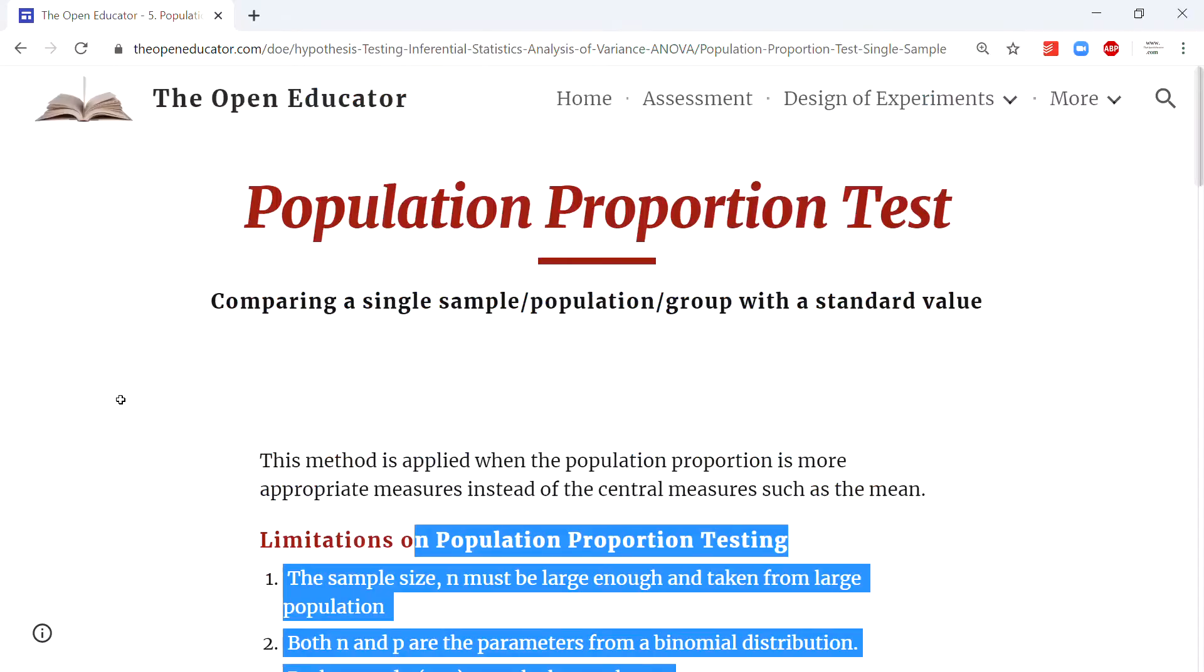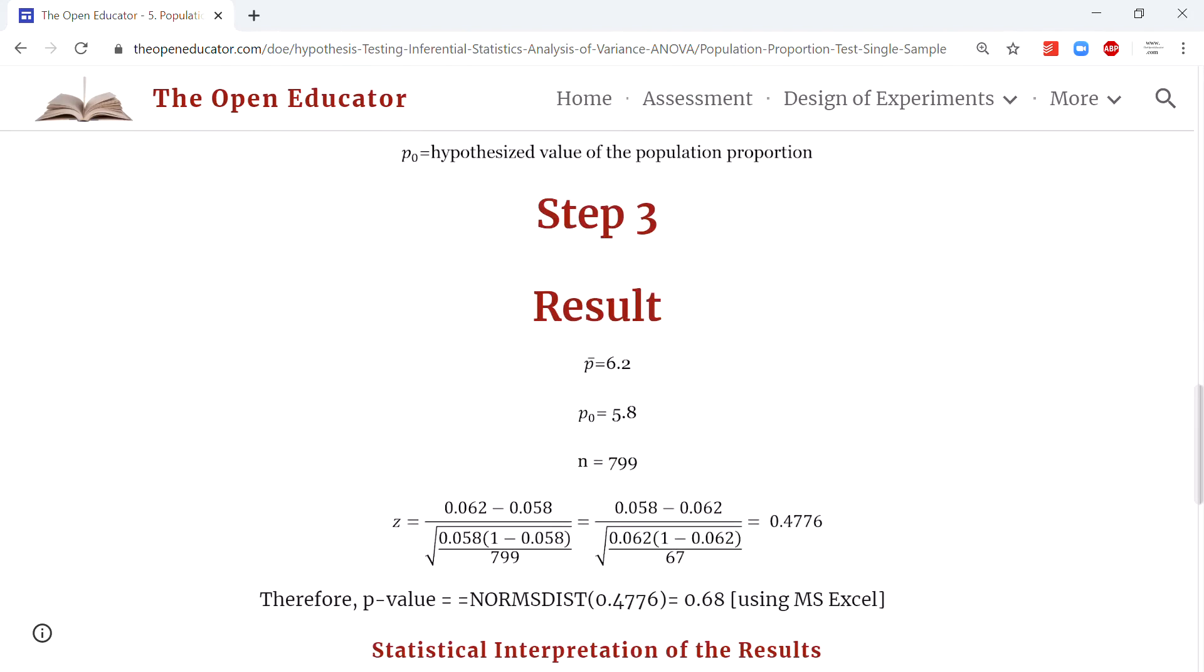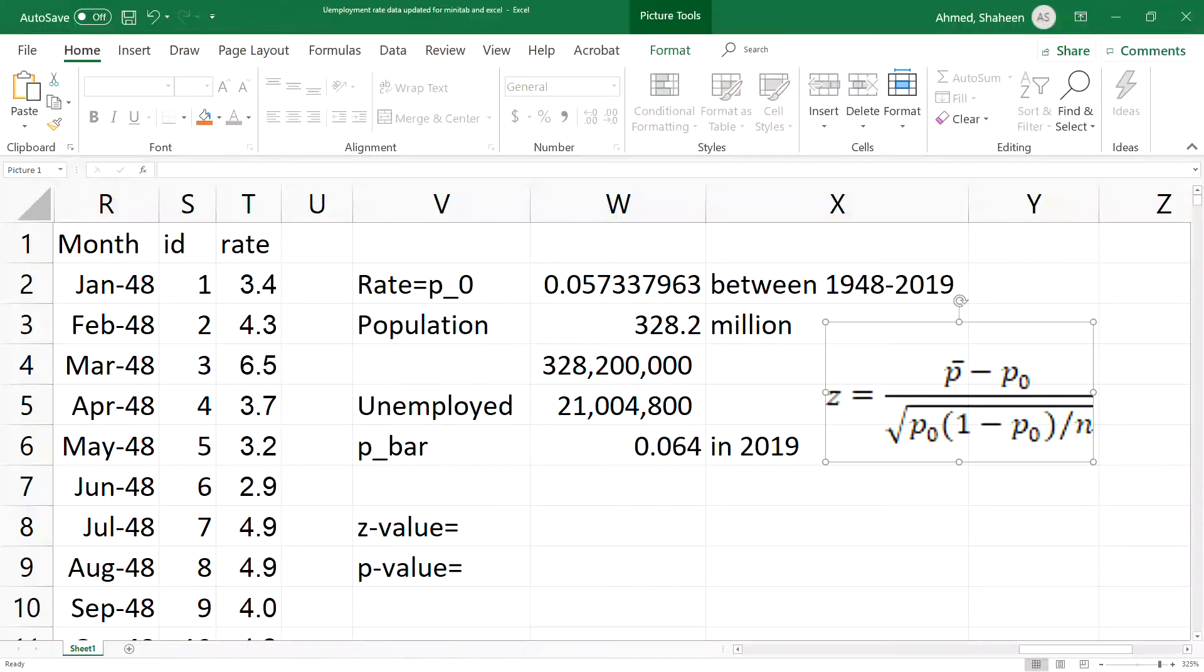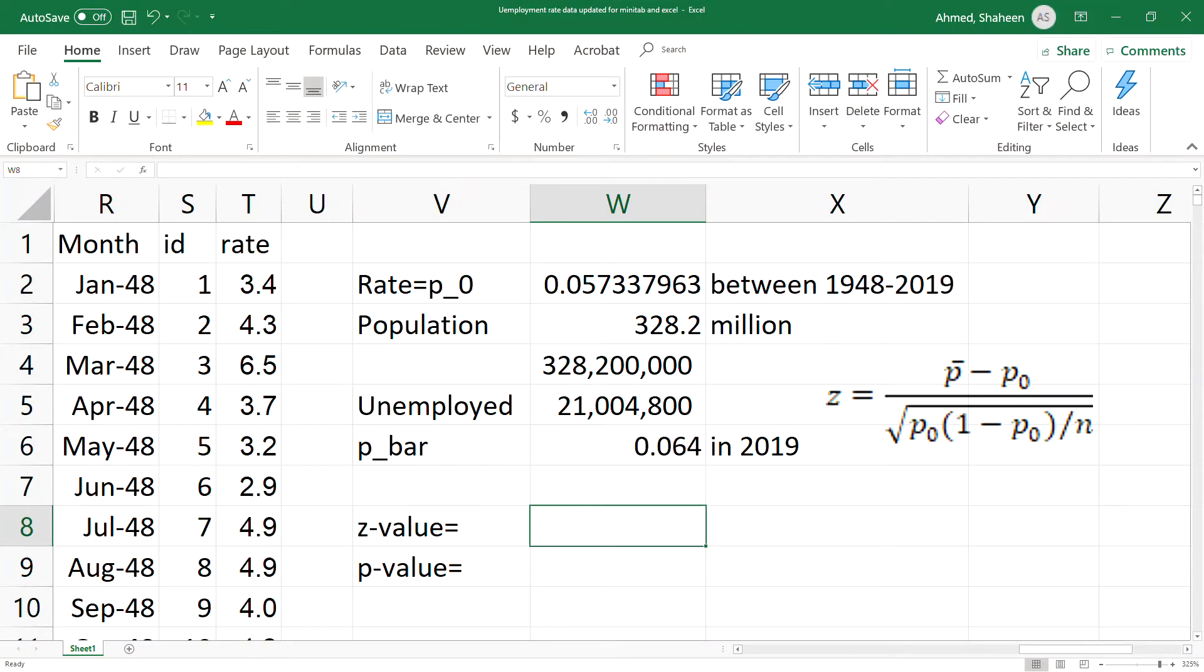This is the formula. To see all the formulas and details, you can see theopeneducator.com under hypothesis testing and population proportion test. Let's write it here. I'm going to start with the parentheses: p-bar minus the historic rate, close the parentheses. A lot of time my students switch between p-bar and p-zero. P-zero is for the entire population and p-bar is the smaller number. This unemployment rate in 2019 would be p-bar and p-zero would be the average for the entire data set.